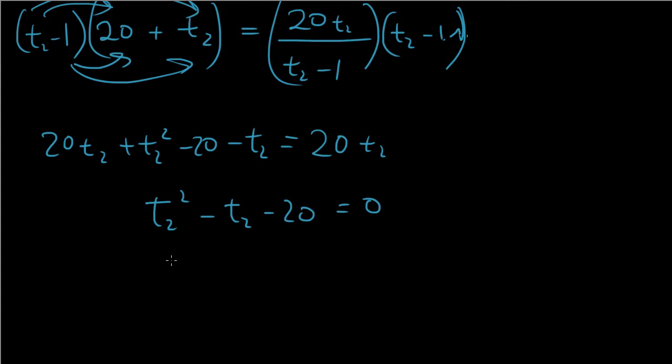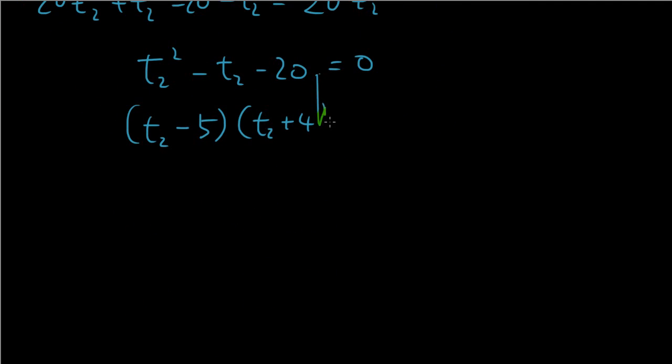This looks pretty simple. I just need to think of two numbers that multiply to give me negative 20, but add together to give me negative one. I'm guessing that will be minus five and plus four. Negative five times four is negative 20. And then four T2 minus five T2 will be negative T2. So T2 is equal to five or negative four after we solve the equation.